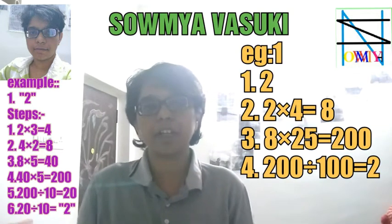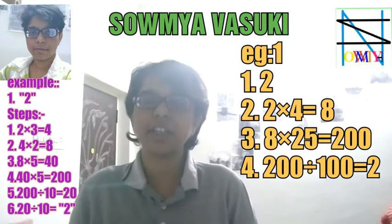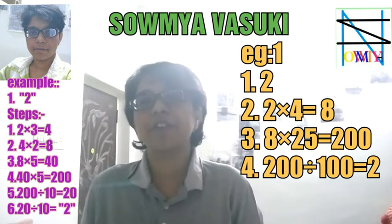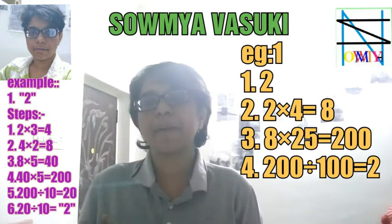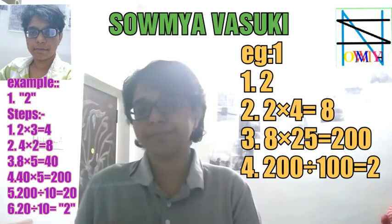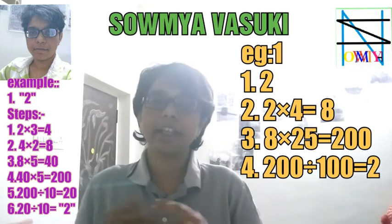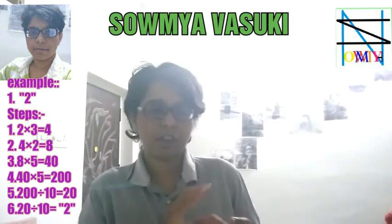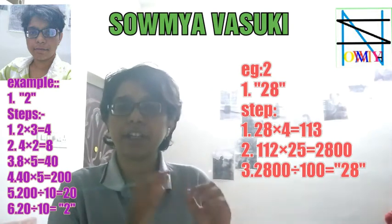If you want to write a number, you can write a number in 100. You can write a number in 4. If you want to write a number in another, you can write a number in 25. The number in another six, you can write a number in 100. You can write a number in the other six, and this is the number in the other six.